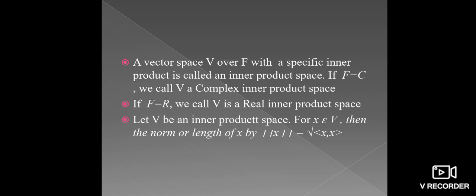A vector space V over the field F with a specific inner product is called an inner product space. If F equals C, we call V a complex inner product space. If F equals R, we call V a real inner product space. Now see the definition of norm or length: let V be the inner product space; for X belonging to V, the norm of X equals the square root of the ordered pair (X, X).